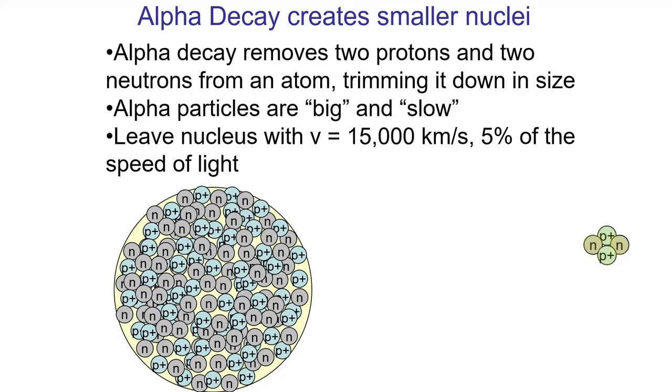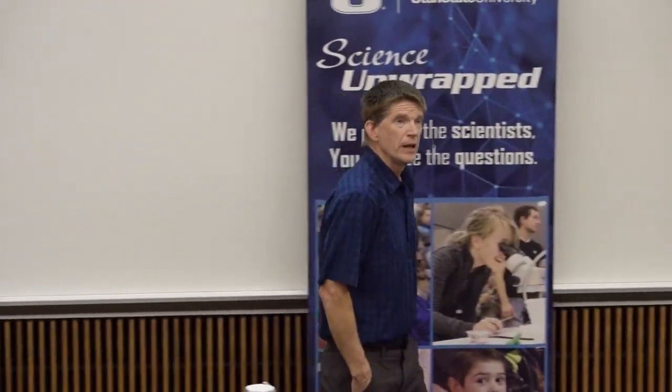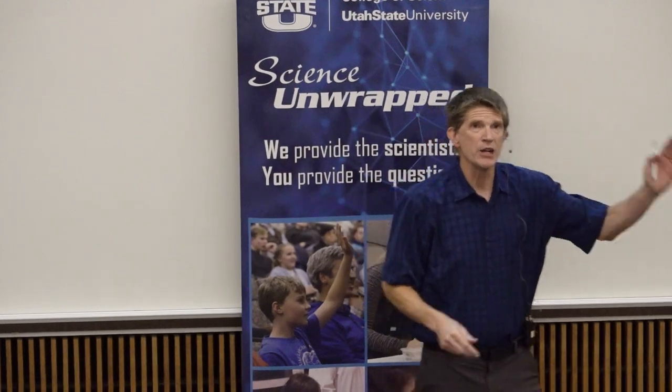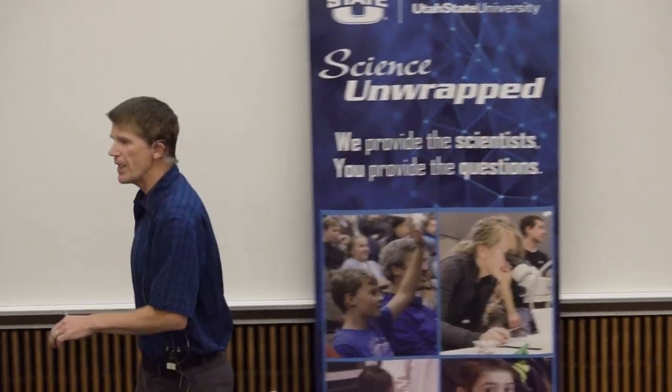Now a second way that atoms can undergo decomposition is by something called beta decay. And this occurs for atoms for which the neutron to proton ratio is too high. So here we're looking at carbon-14. Carbon-14 contains eight neutrons and six protons, and that's too many neutrons to make it stable. So this is really neat. Watch that neutron in red right there, and watch what happens to it during radioactive decay. It just emitted a negatively charged particle, which is an electron. And when you take a neutron and you remove an electron from it, you convert it into a proton. So what I just did was I converted a carbon atom into a nitrogen atom by changing the number of protons in the nucleus from six to seven. And that's what we call beta decay.